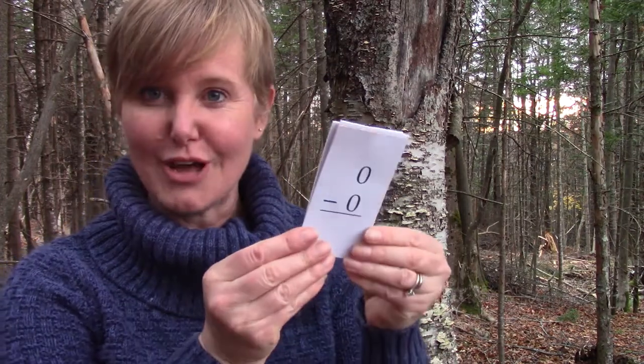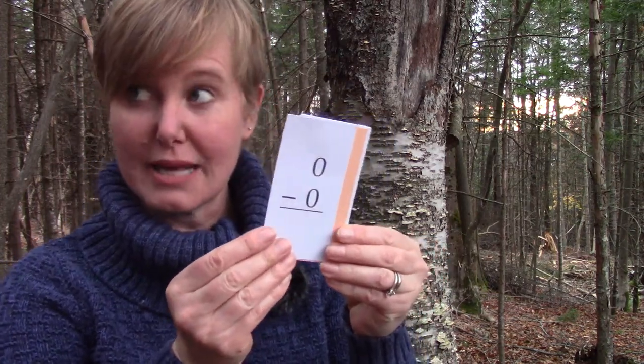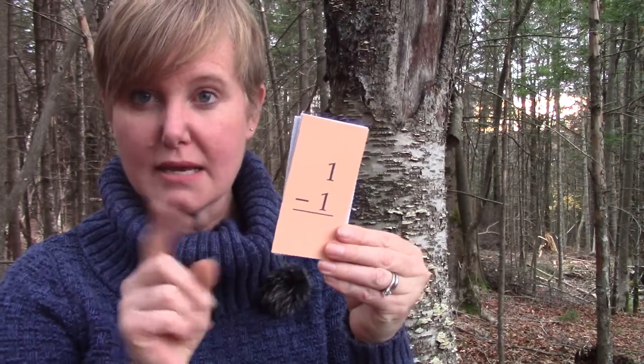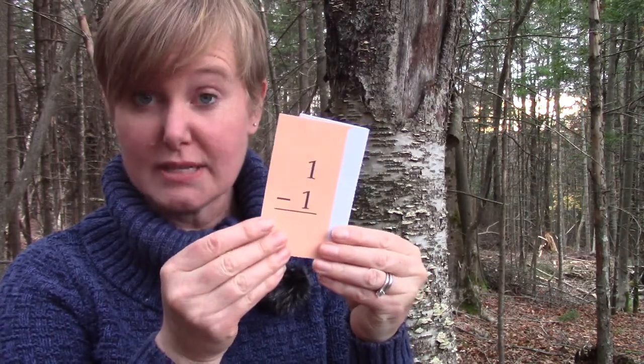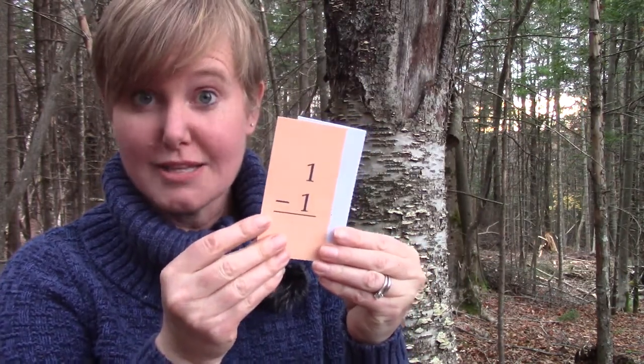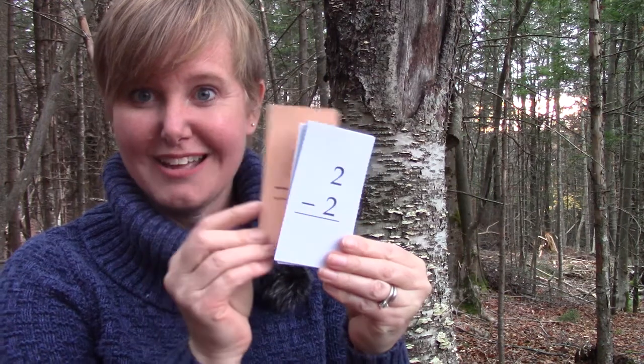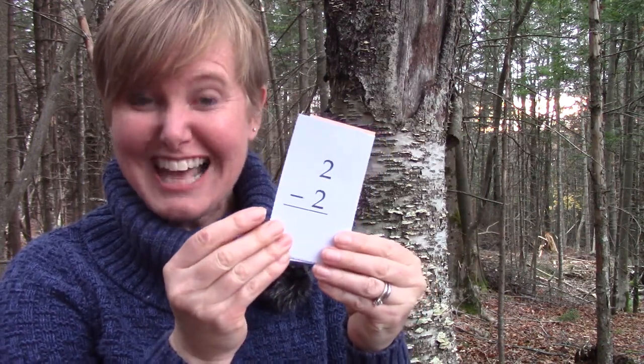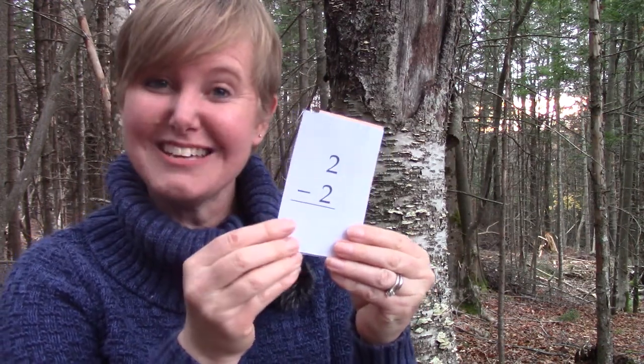Sometimes we only take away part of a number, but today we're taking it all away. So if we have zero, we'll take away zero, so our answer is zero. If we have one, we're going to take away everything — we're going to take away one — so our answer is zero. If we have two, we're going to take away two, and our answer will be zero.